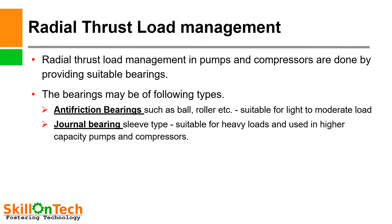Radial thrust load management in pumps and compressors is done by providing suitable bearings. The bearings may be of the following types: anti-friction bearings such as ball and roller bearings, which are suitable for light to moderate loads; and journal bearings, sleeve type, which are suitable for heavy loads and used in higher capacity pumps and compressors.